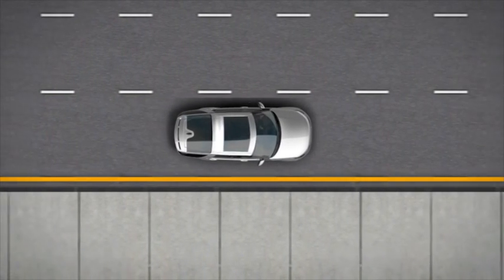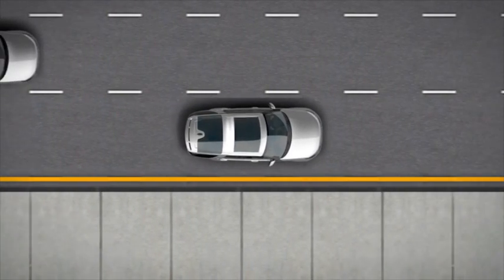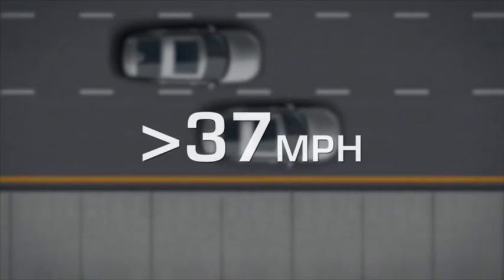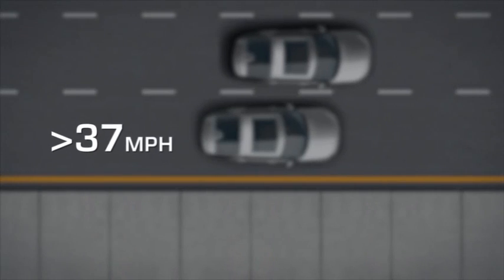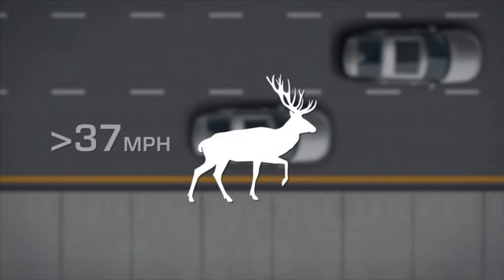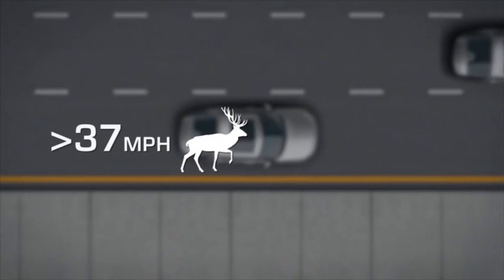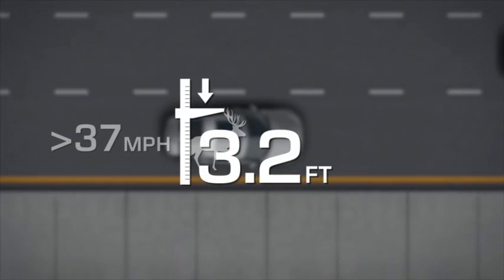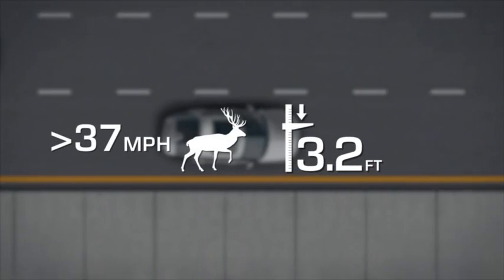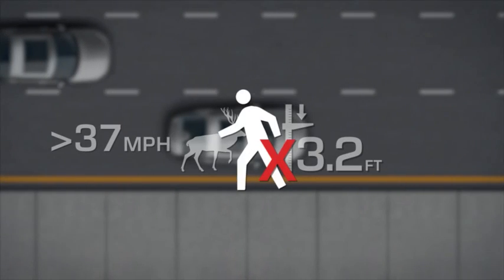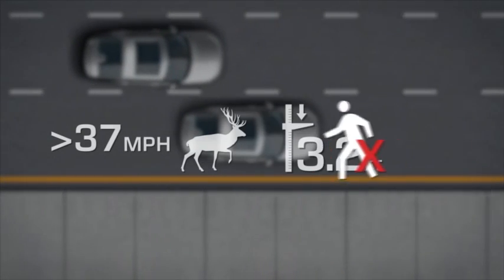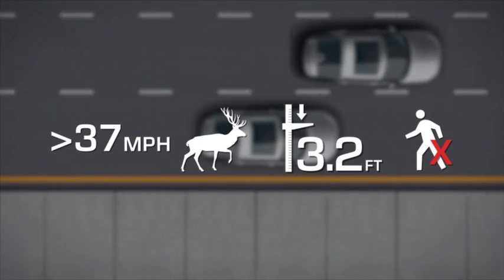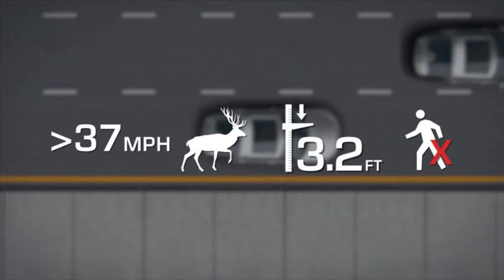In addition, the pedestrian AEB detection system will not operate if: the vehicle's speed exceeds 37 miles per hour; the detection object is not identified as a pedestrian; the height of the object is less than 3.2 feet; or the system cannot determine the target object is a pedestrian — for example, if the pedestrian is carrying a large object.